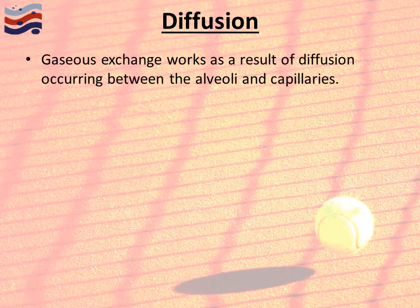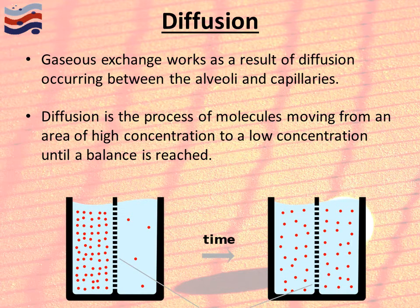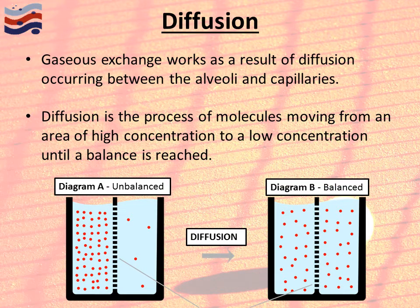This process is aided through diffusion, which happens between the alveoli and capillaries. Diffusion is the process of molecules moving from an area of high concentration to an area of low concentration until it is more evenly balanced. Diagram A shows a clearly unbalanced state — many molecules on one side and very few on the other. Over time, diffusion results in diagram B, where molecules have travelled through the cell walls until we have a more balanced representation.